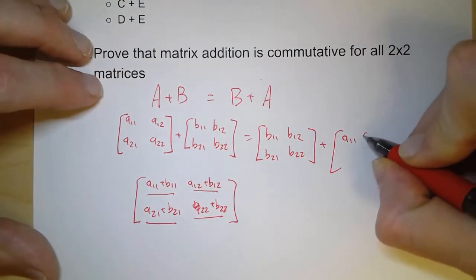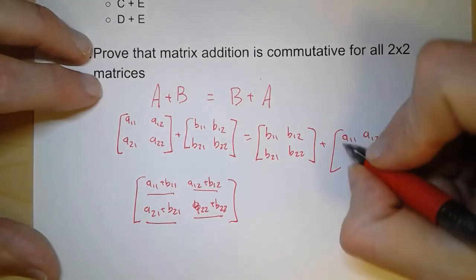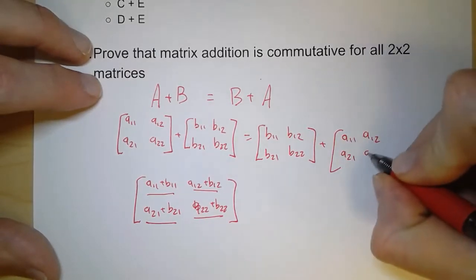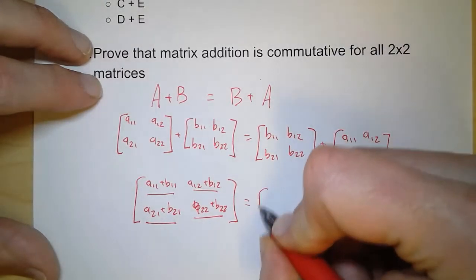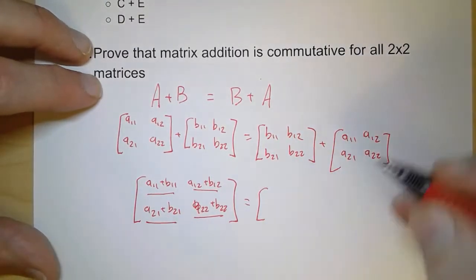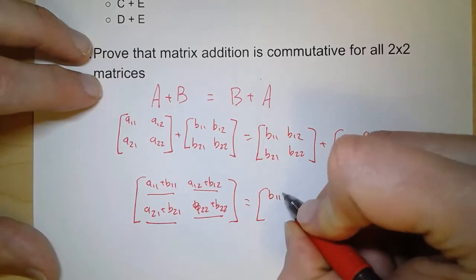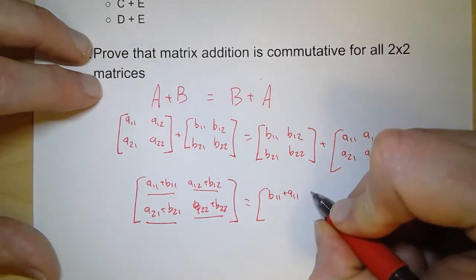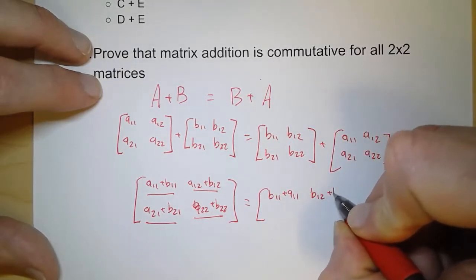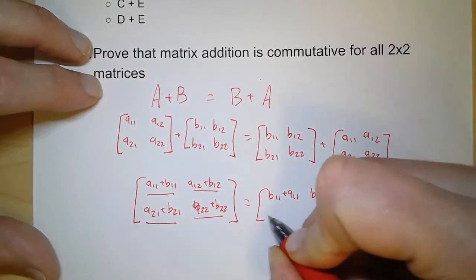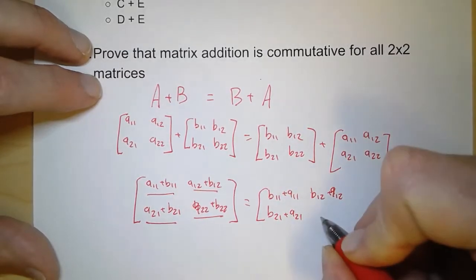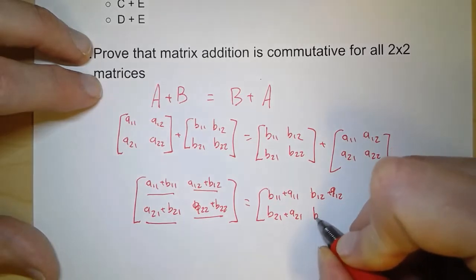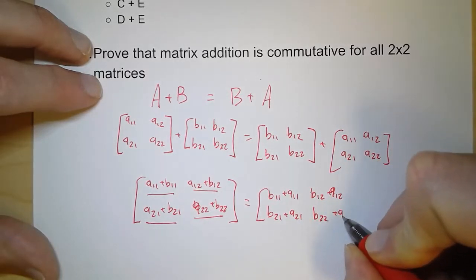And so when we add these, we start with matrix B. So B11 plus A11, B12 plus A12, B21 plus A21, and B22 plus A22.